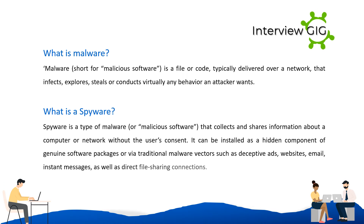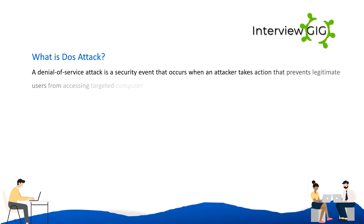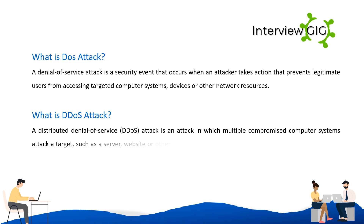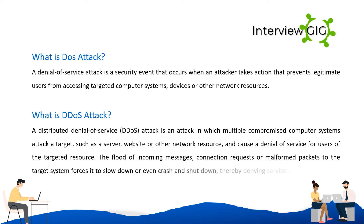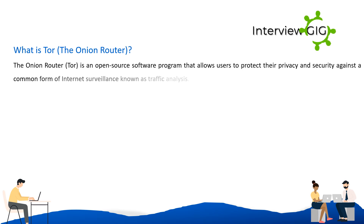What is a DoS attack? A Denial of Service attack is a security event that occurs when an attacker takes action that prevents legitimate users from accessing targeted computer systems, devices, or other network resources. What is a DDoS attack? A Distributed Denial of Service attack involves multiple compromised computer systems attacking a target such as a server, website, or network resource. The flood of incoming messages, connection requests, or malformed packets forces the target system to slow down or crash, denying service to legitimate users. What is TOR? The Onion Router (TOR) is open-source software that allows users to protect their privacy against internet traffic analysis.